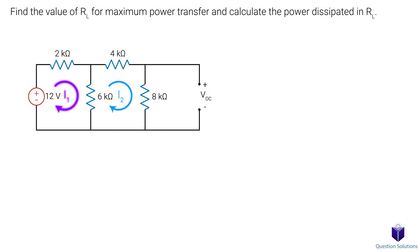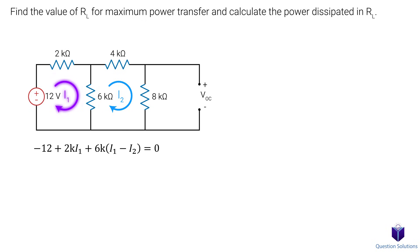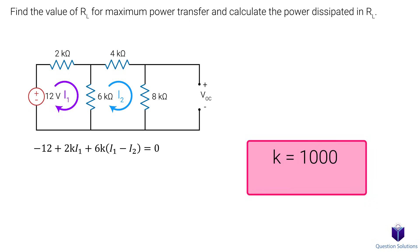Let's write an equation for the left mesh. We enter the negative terminal of our voltage source, then we have 2k ohms times I1, and then 6k ohms times I1 minus I2. Since we are writing our mesh equation for I1 and I2 is opposing the flow of current through the 6k ohm resistor, it'll be I1 minus I2. It should be noted that whenever I write K it represents 1000, and M represents 10 to the negative 3. This makes it easier rather than writing 8000 ohms or 0.002 amps.